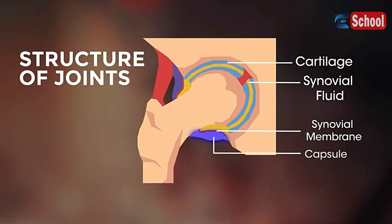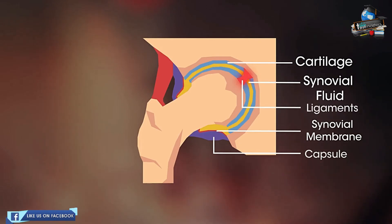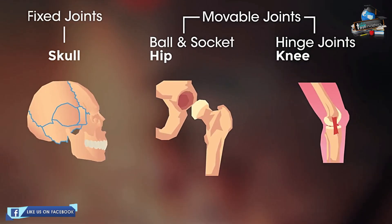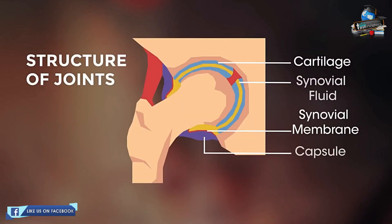We've already seen ligaments earlier. They are fibers that hold the bones together. So we've seen what joints are, the three main types, and the structure of joints.